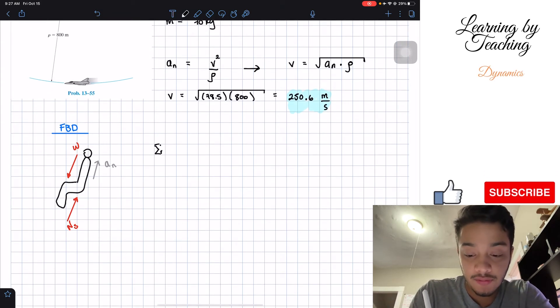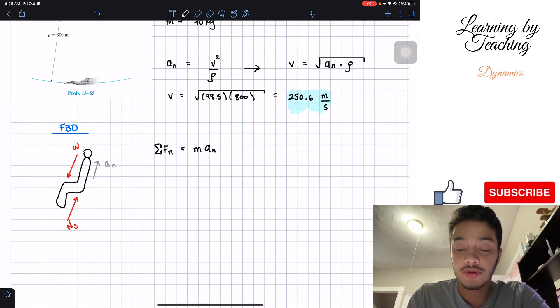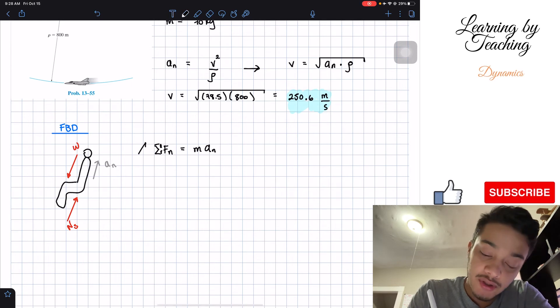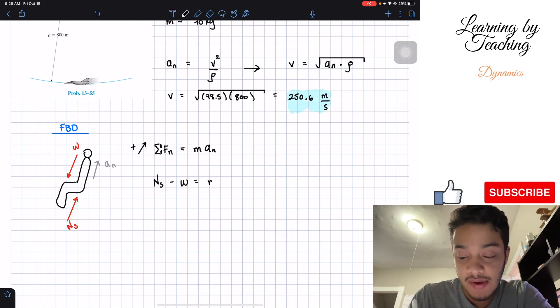Now that we know that, we can perform a summation of forces in the normal direction. And this should be equal to my mass times my acceleration in the normal direction. So, what forces do we have? Well, if we assume that going up, or more than up, going vertically up, is positive, then we have positive my normal force minus the weight has to be equal to my mass times positive acceleration.